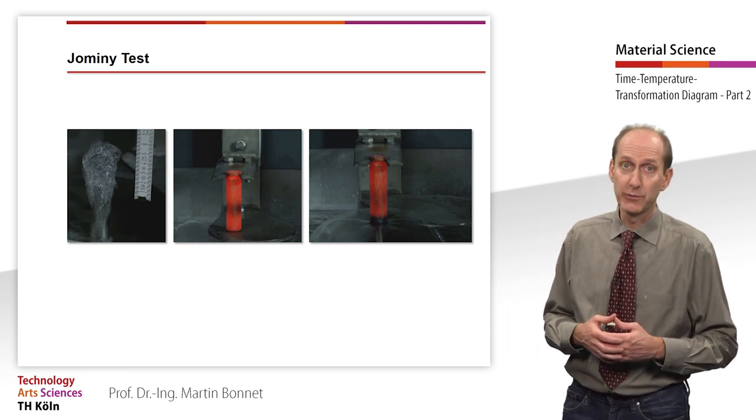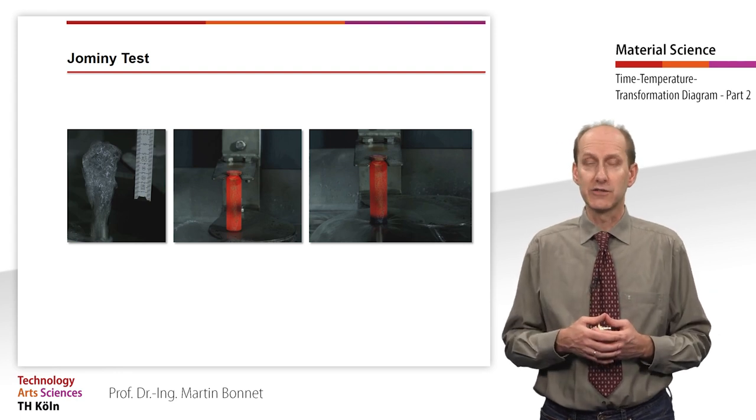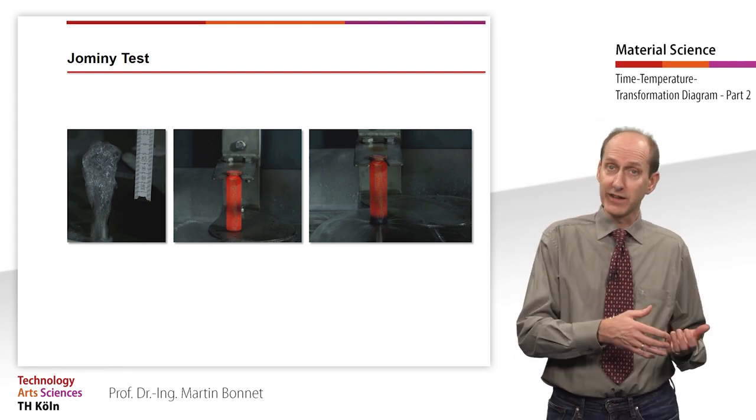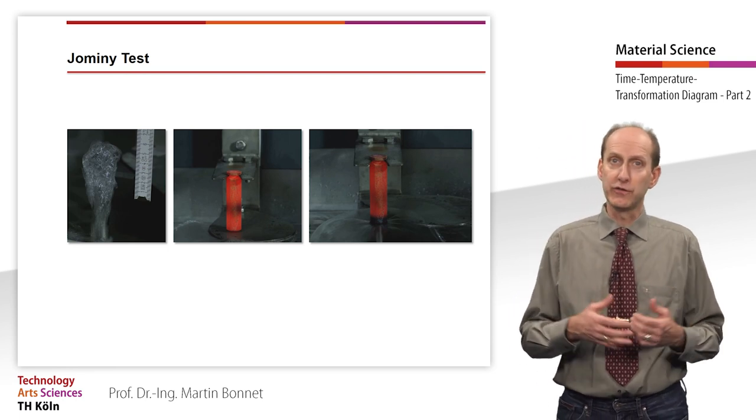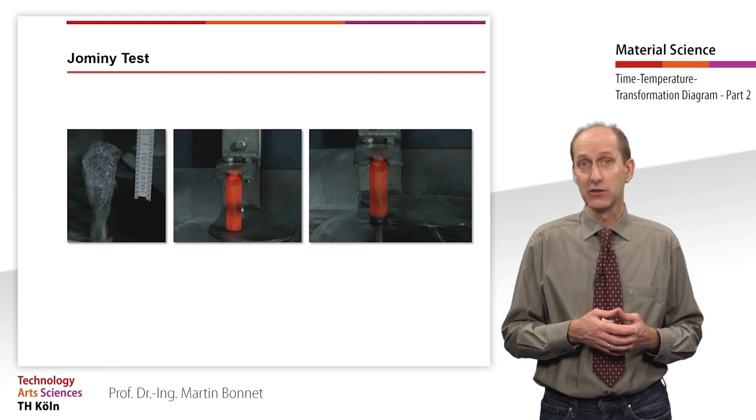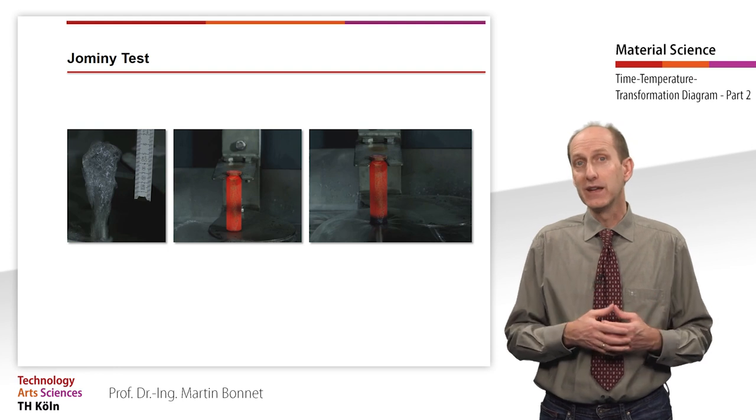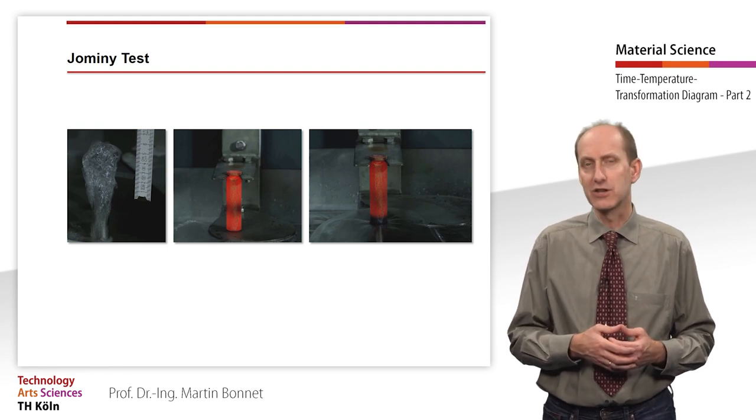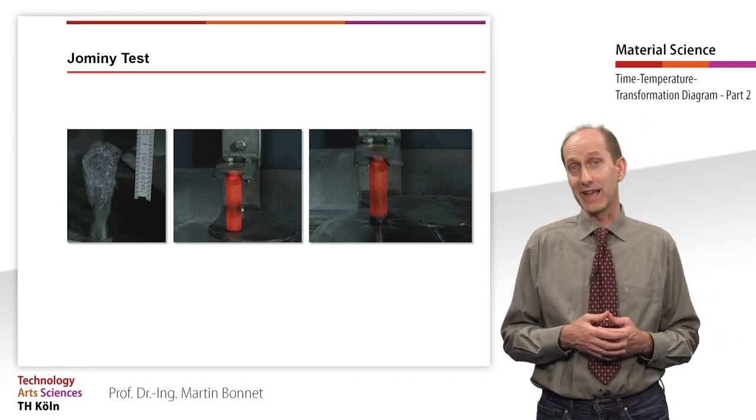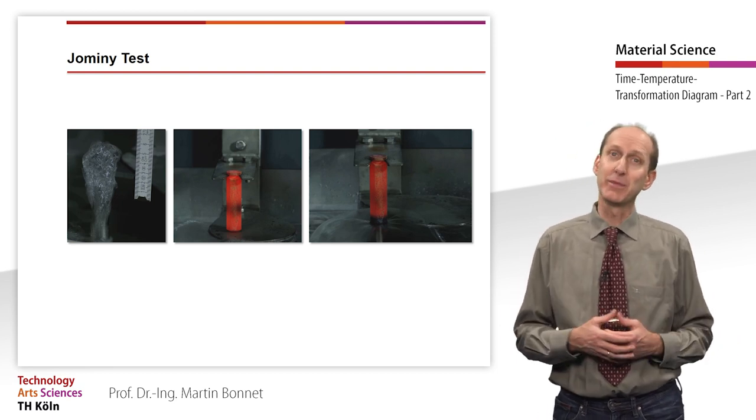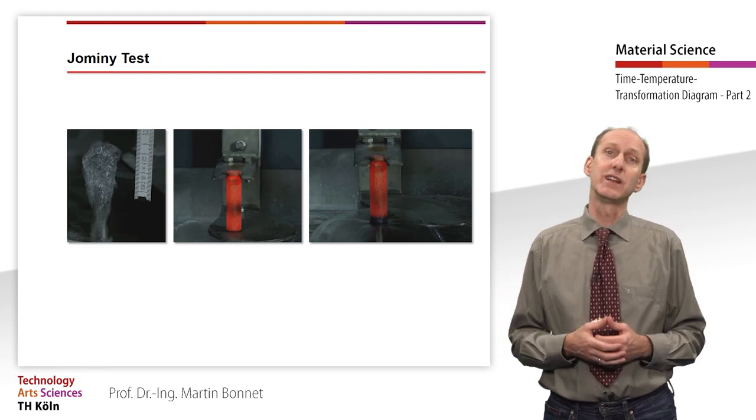During cooling from the austenitizing temperature, steel in the solid state transforms from the face-centered cubic lattice to the body-centered cubic lattice. During the diffusion-less transformation, during hardening, the carbon remains forcibly dissolved and leads to very strong tension of the lattice. The high hardness results from this tension in the lattice. The more carbon is dissolved in the lattice, the higher the lattice tension and thus the resulting hardness.